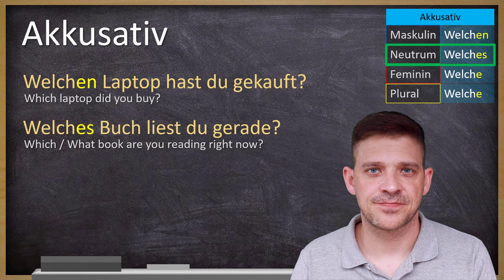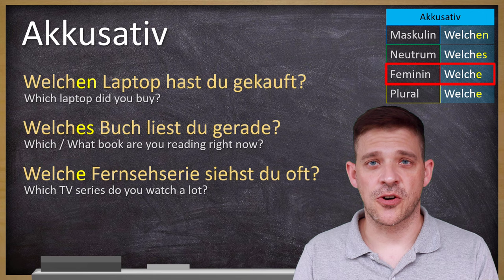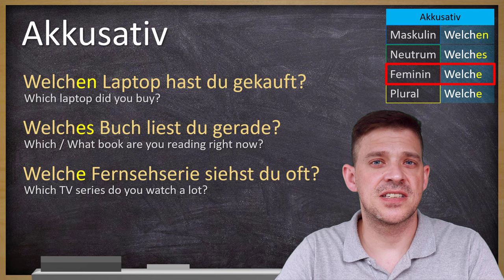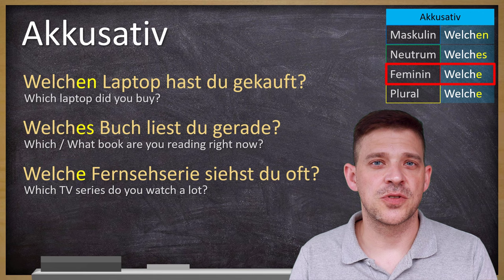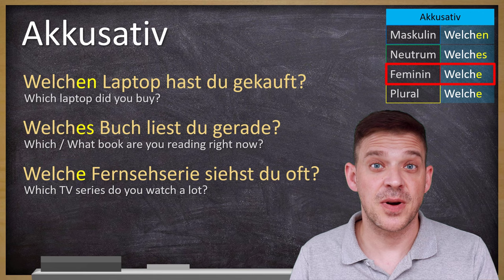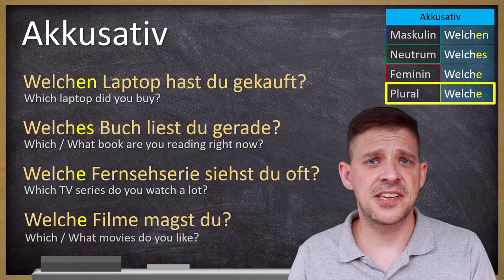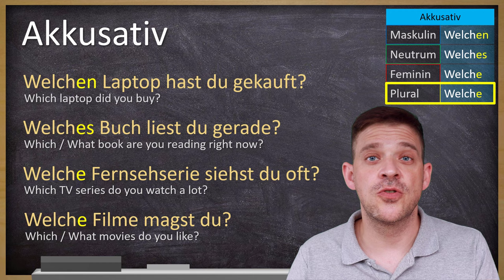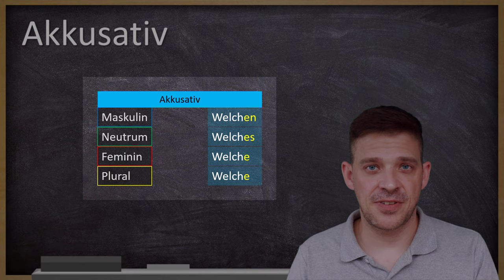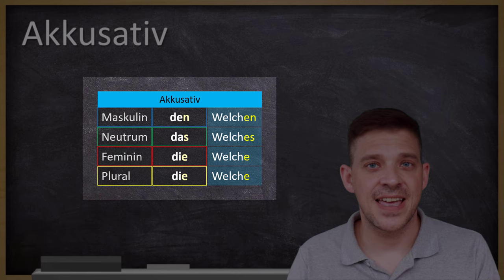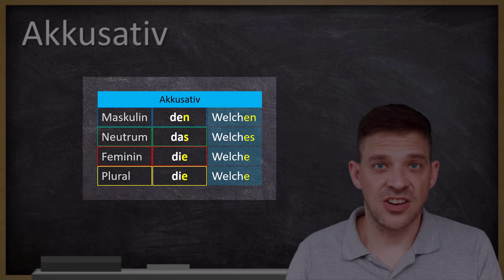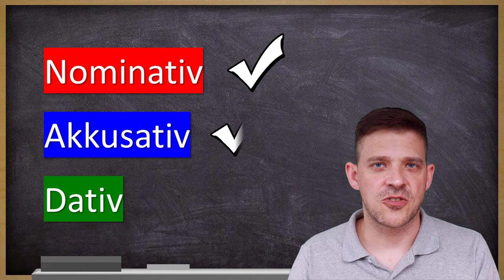Feminin: Welche Fernsehserie siehst du oft? — Which TV series do you watch often? Sehen takes Akkusativ, but no change from Nominativ for feminine. Und ein Beispiel im Plural: Welche Filme magst du? — Which movies do you like? The endings match the definite articles: den, das, die, die — exactly the same endings for the question article welch. Nominativ and Akkusativ are both done. Let's go to Dativ.